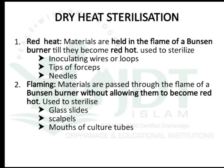There are four methods in dry heat sterilization. The first is red heat, in which material is held in the flame of a Bunsen burner until it becomes red hot. This is mainly used to sterilize microbiological laboratory instruments like inoculating wires or loops, tips of forceps, and needles. The material must be heat-stable and recover back to normal state after the process.